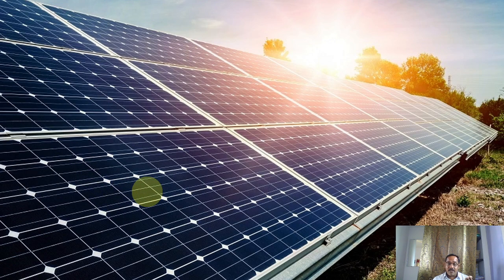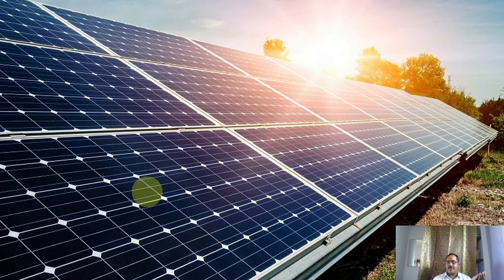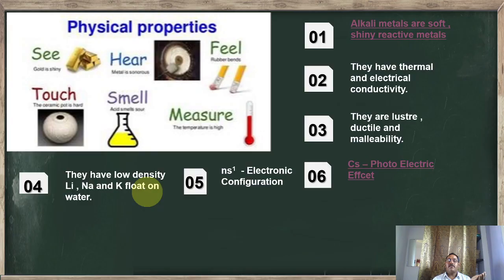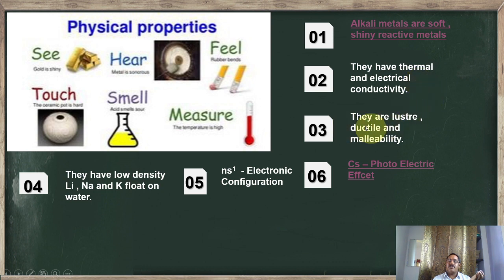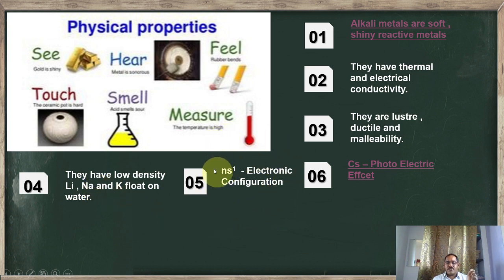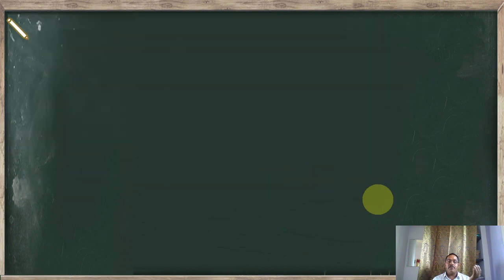Solar panels, like those on top of buildings, use this property to generate electricity. To summarize the physical properties: alkali metals are soft; they conduct thermal and electrical energy; they are lustrous, ductile, and malleable; they have low density; their common electronic configuration is ns¹; and cesium ejects electrons when sunlight falls on it.